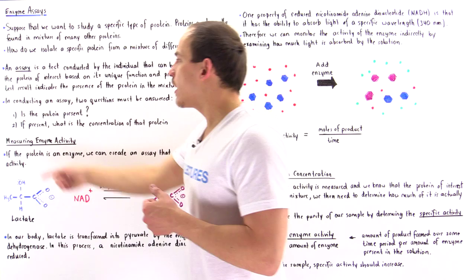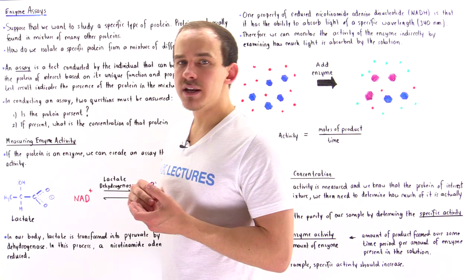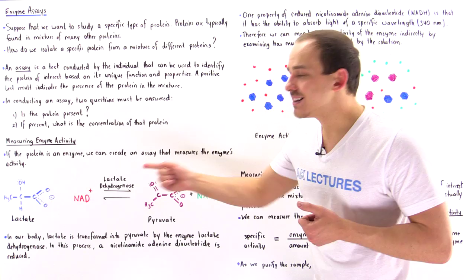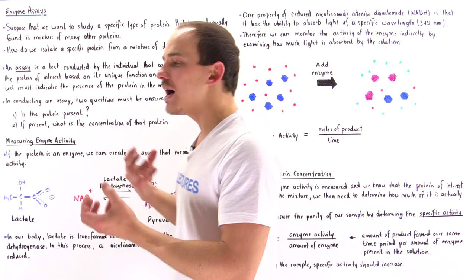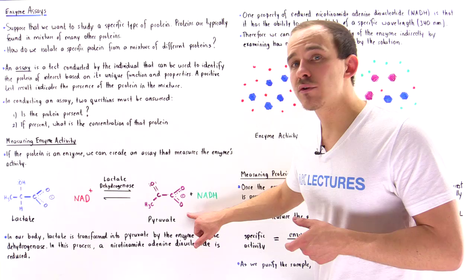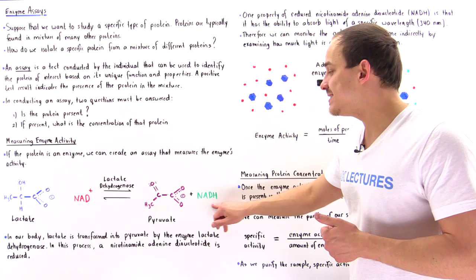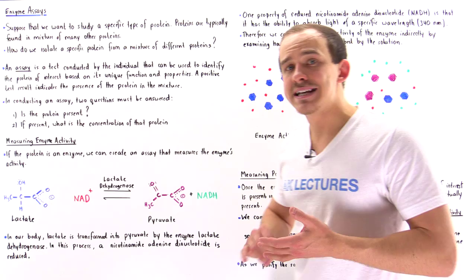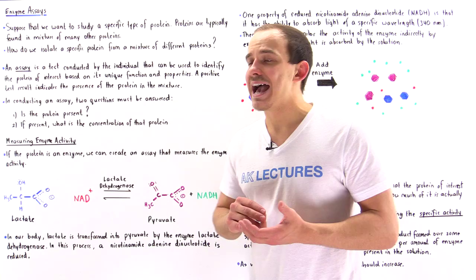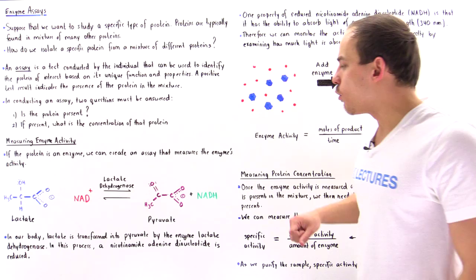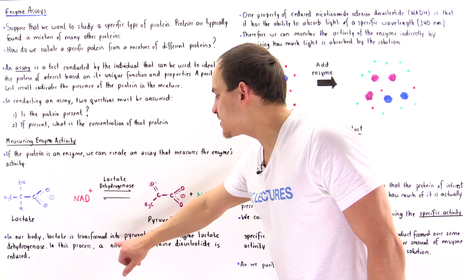In this lecture, we're going to focus on measuring enzyme activity when we conduct our protein assay. To demonstrate how we can measure enzyme activity, let's focus on a specific type of enzyme found in our cells: lactate dehydrogenase. Lactate dehydrogenase is a biological catalyst that converts lactate into pyruvate.